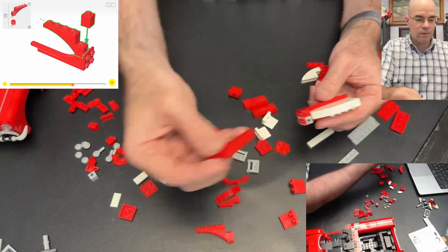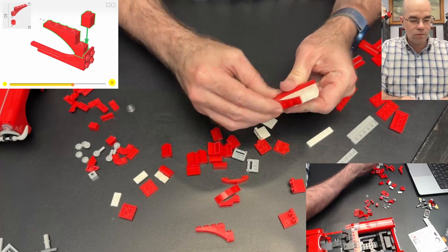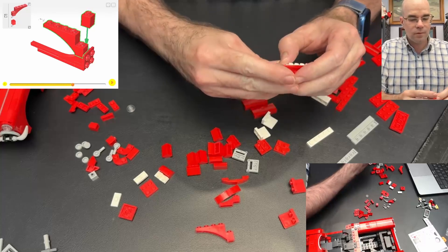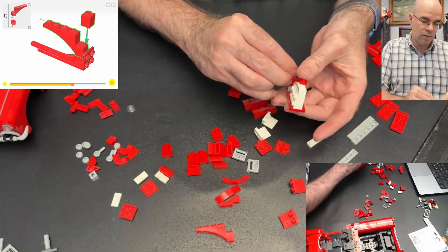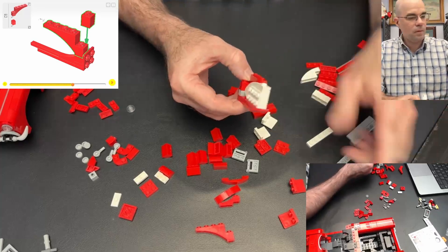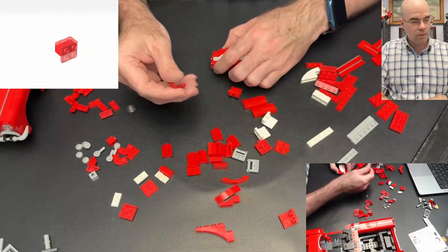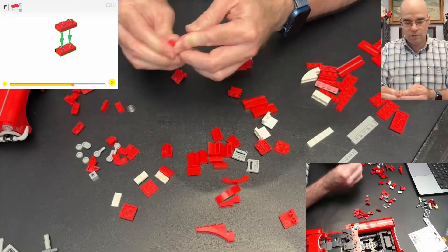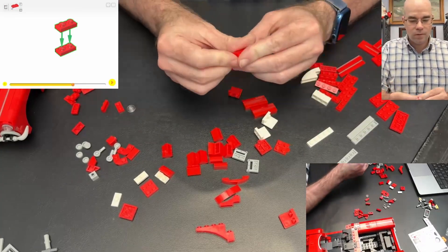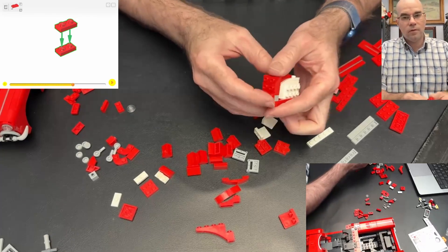Okay, and then we have this slope going over top of it. I'll take two of these and put them underneath and put that on top.